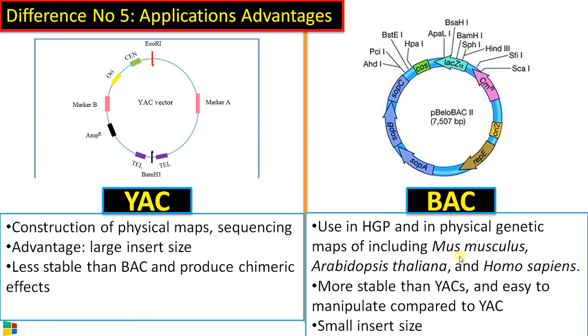Whereas in the case of BAC vector, it is widely used in the making of physical maps and sequencing, especially in the preparation of maps of Mus musculus mouse, then Arabidopsis thaliana, and even human genome project. It's more stable than YAC and it is easy to manipulate compared to YAC. But the major problem is the small insert size compared to YAC. Now both these vectors are widely used for the preparation of physical maps and sequencing of many genomes.